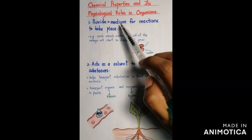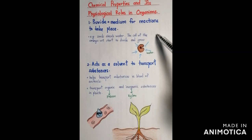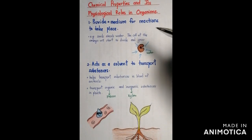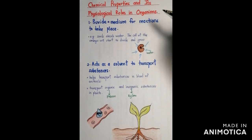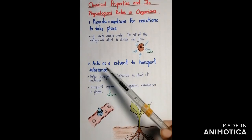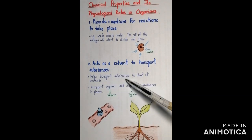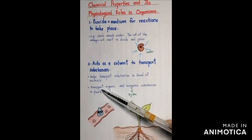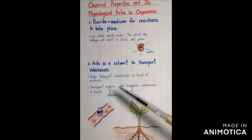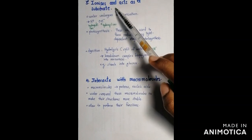Now we'll see the chemical properties and their physiological roles. Water provides a medium for reactions to take place — for example, seeds absorb water to germinate, so the cells of the embryo start to divide and grow. Water also acts as a solvent to transport substances: it helps transport substances in the blood of animals and transports organic substances in phloem and inorganic substances in xylem in plants.